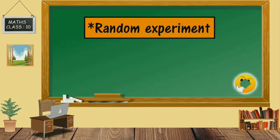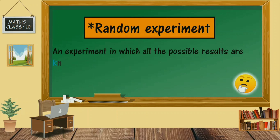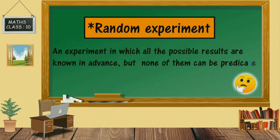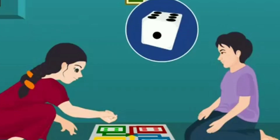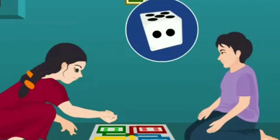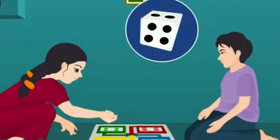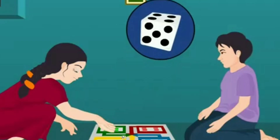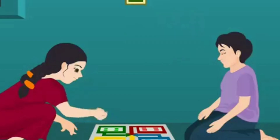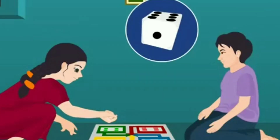A random experiment: an experiment in which all the possible results are known in advance, but none of them can be predicted with certainty, is called a random experiment. For example, we know that on a dice, one to six numbers are marked. After throwing a dice, randomly one of the numbers comes up. But the exact number cannot be predicted with certainty. This is a random experiment.